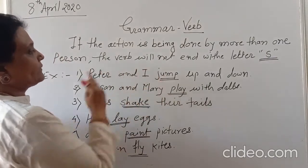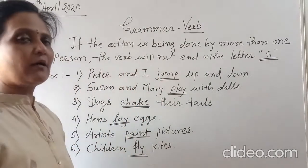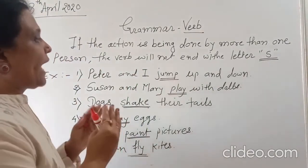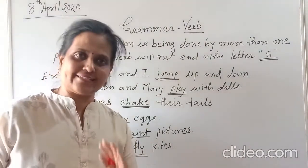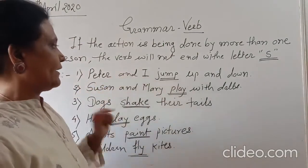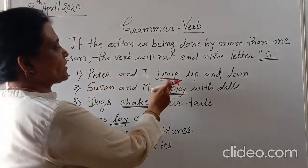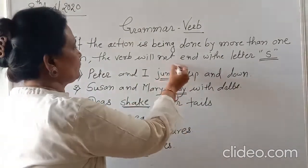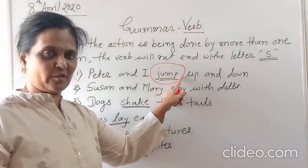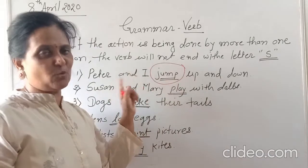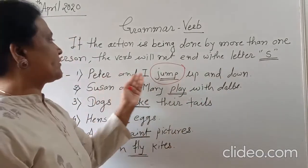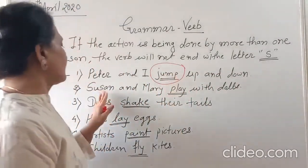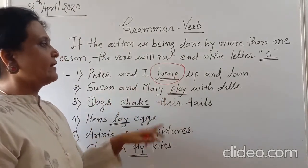So when two persons — one and more than one person — are doing an action, the action word we cannot use with 's'. Here, Peter and I — both persons are in this sentence. So which is the action word? Jump. Jump is the action word. We cannot use 's' at the end because there are already two persons, more than one person, in this sentence. Peter and I jump up and down. So we cannot use 'jumps'.